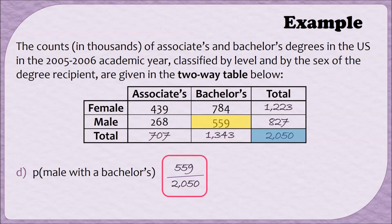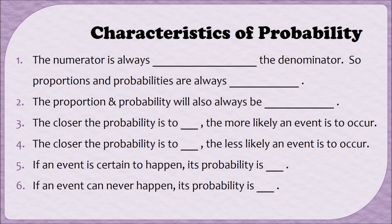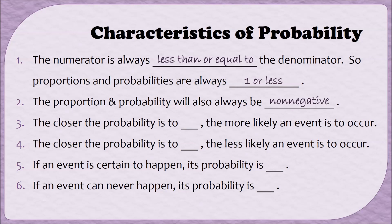Now that we've done some examples of finding probabilities, let's talk about some properties that probability has. The first characteristic is that our numerator is always less than or equal to the denominator, meaning proportions and probabilities are always 1 or below. Also, because the numbers we're dividing are amounts, they'll always be positive, so the probability will always be a non-negative number. I say non-negative rather than positive because probability could be 0, or it could be 1, or a number in between. The closer the probability is to 1, the more likely an event is to occur—you could think of a probability of 1 as being a 100% chance. The closer it is to 0, the less likely the event is to occur.